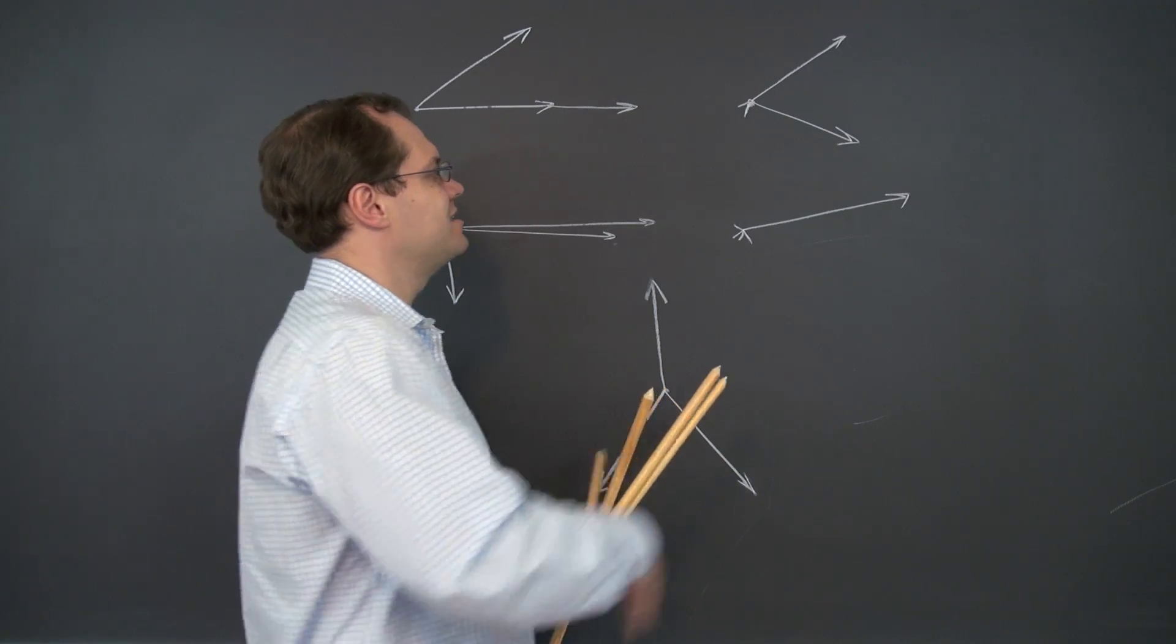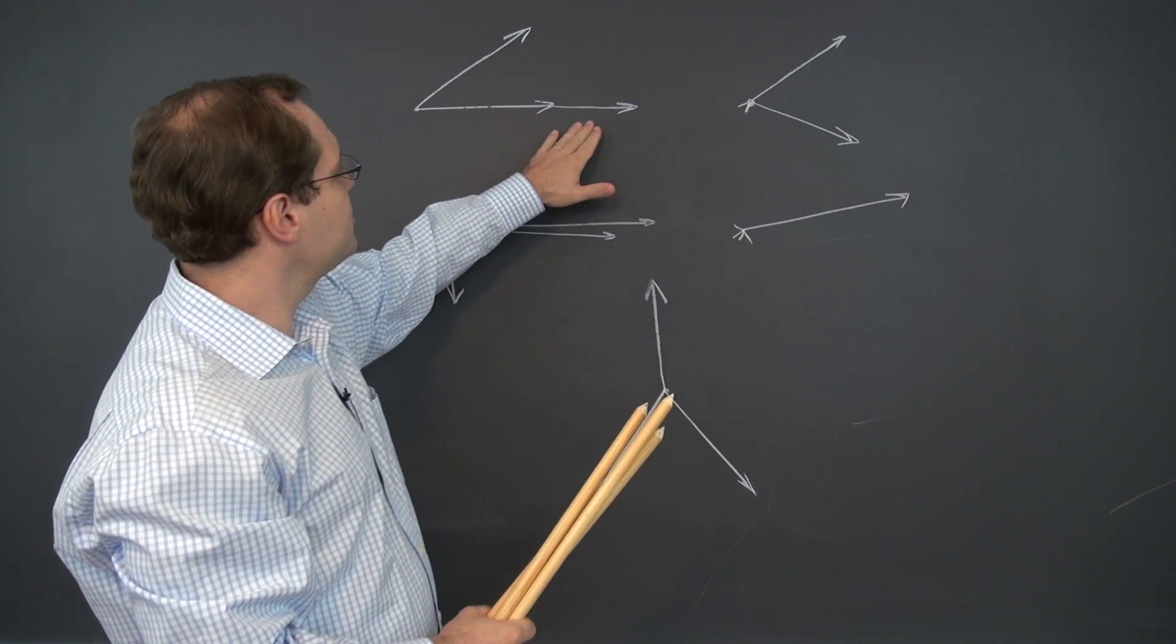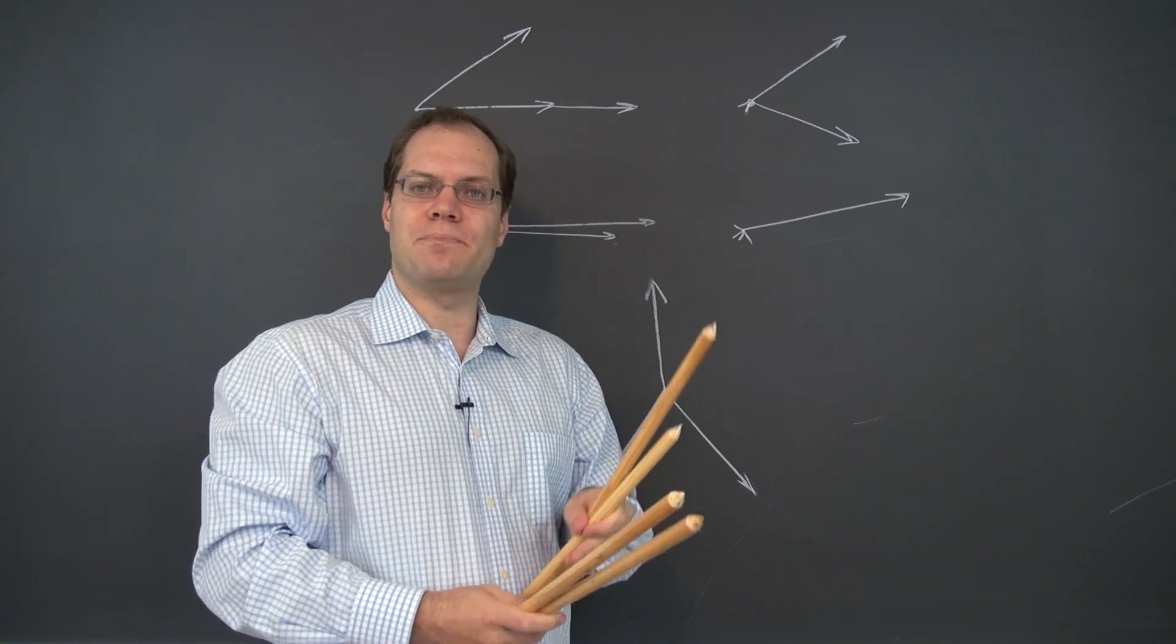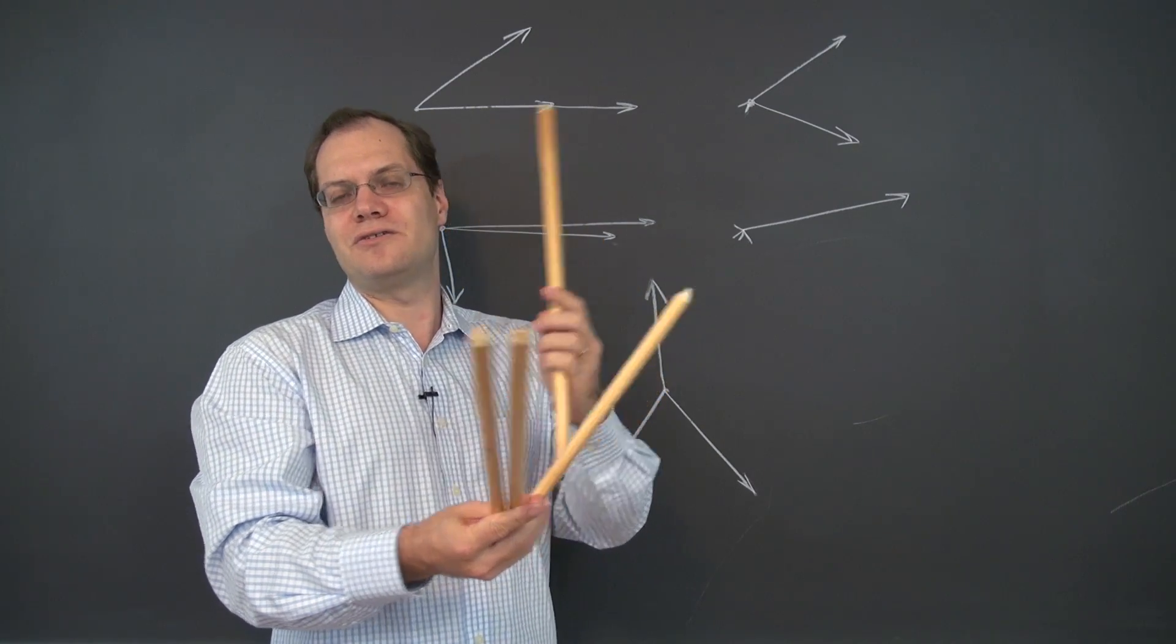Or there could be a zero vector in the mix, and it's automatically a linear combination of other vectors. Or it's an arrangement where two vectors are parallel to each other, collinear, and the rest point in completely other directions.